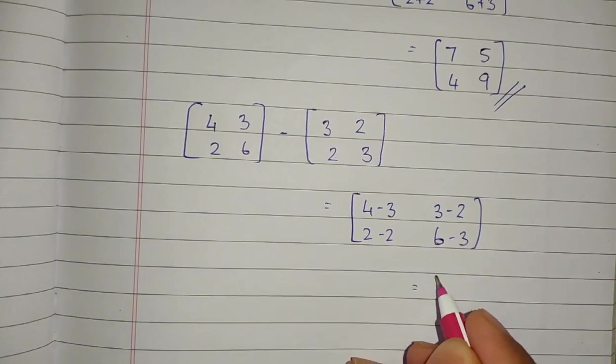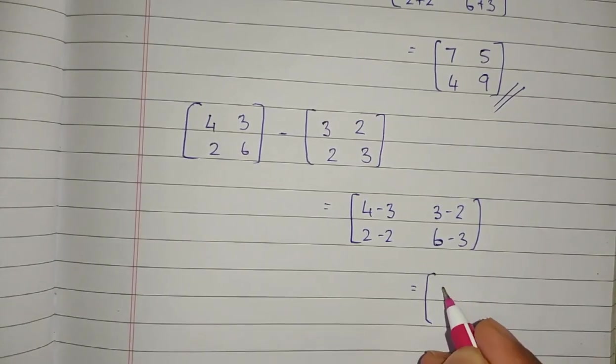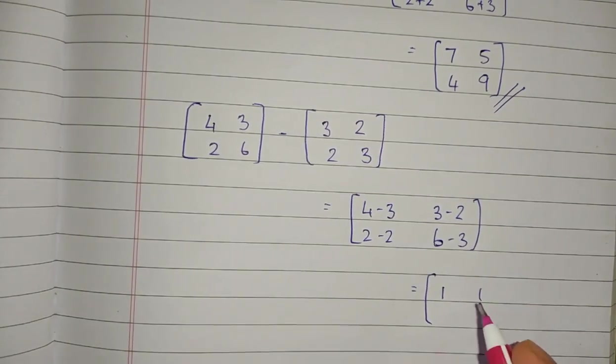So we will get the answer: 4 minus 3 equals 1, 3 minus 2 equals 1, 2 minus 2 equals 0, 6 minus 3 equals 3.